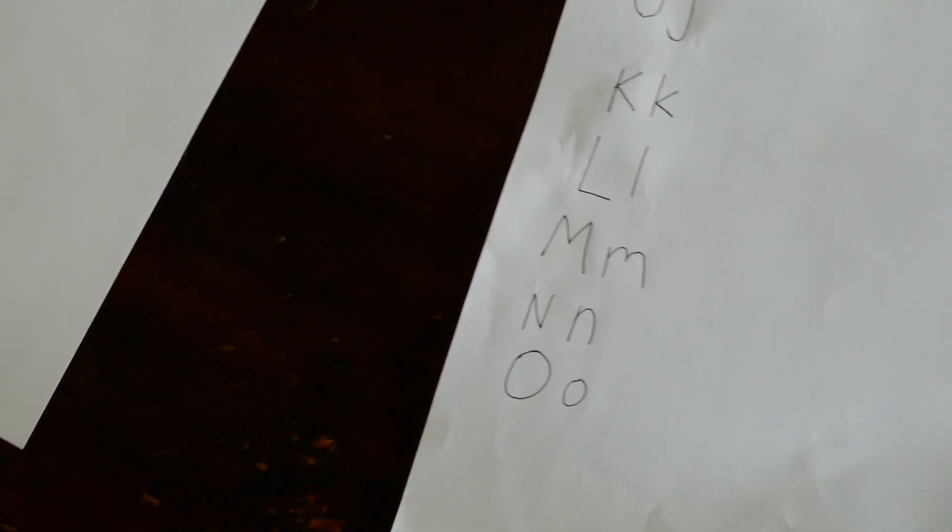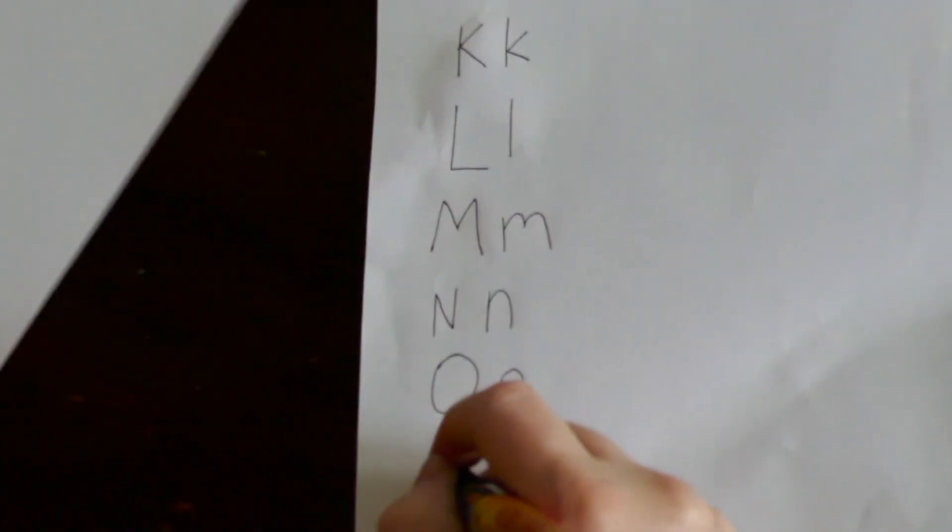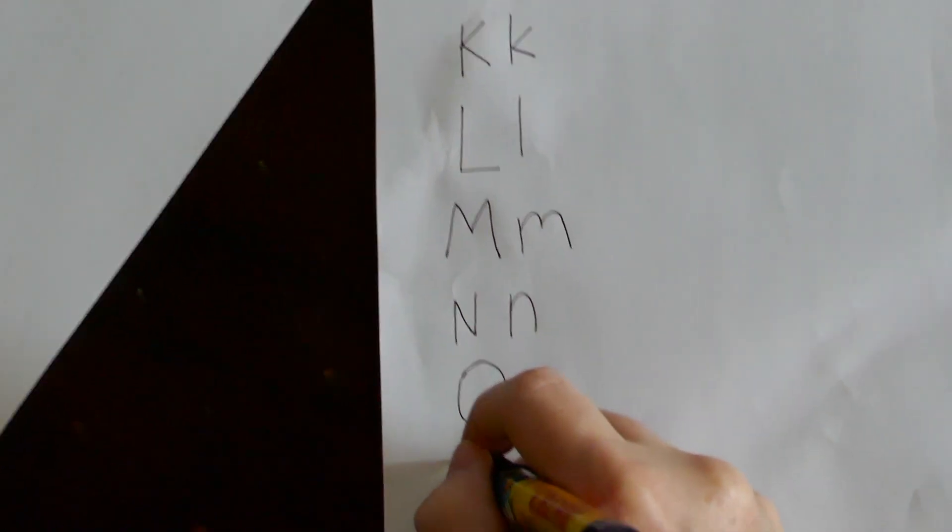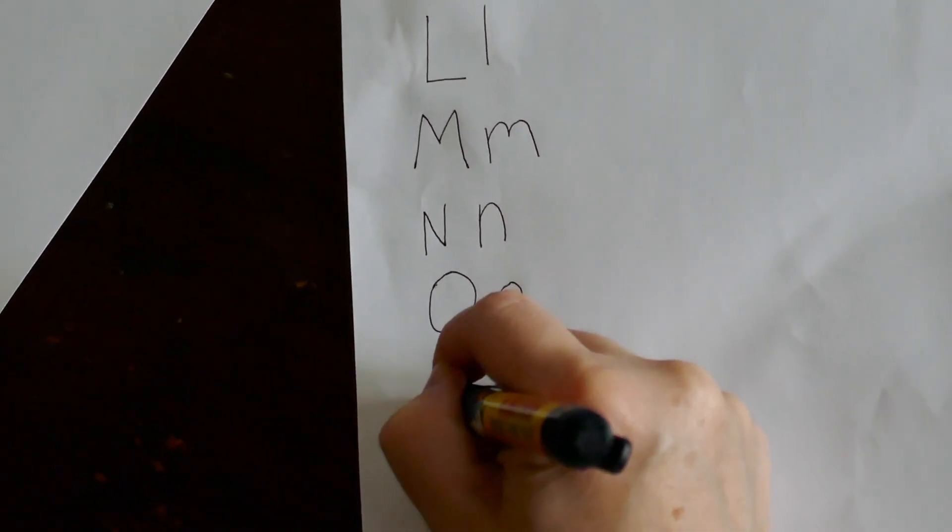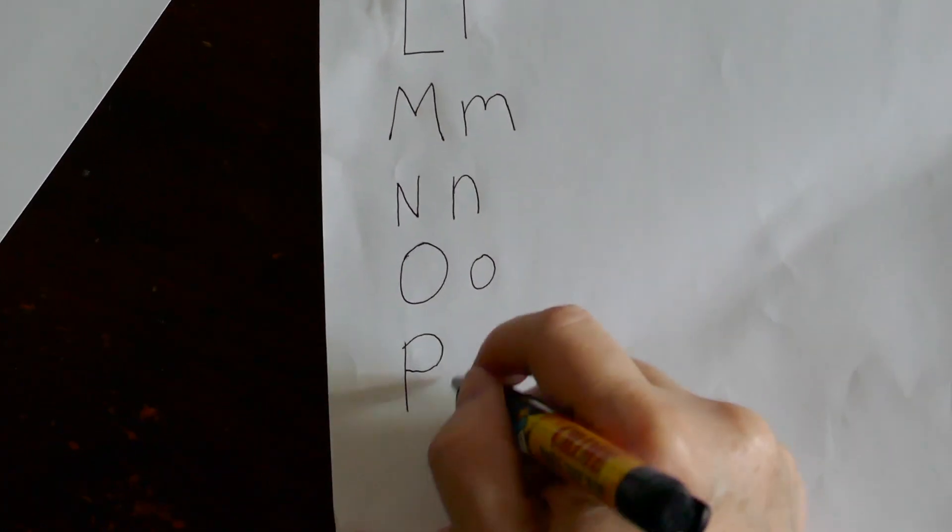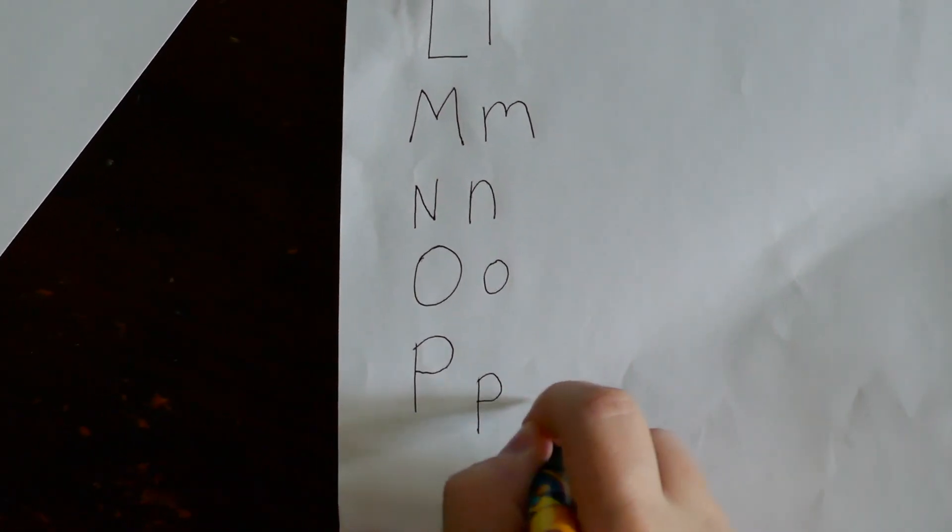And then after O comes... M, N, O, P. Very good. And we have one more letter that looks exactly the same, just a little bit smaller version, from the capital to the lowercase, in which the line goes below the line that you're writing on. The capital one is like the grown-up of the lowercase one. That's right.